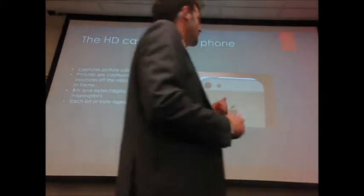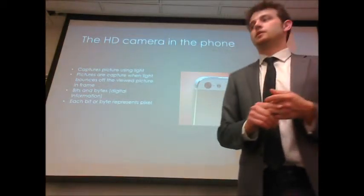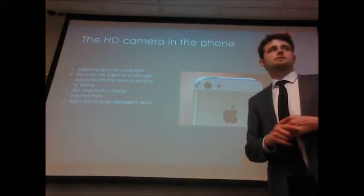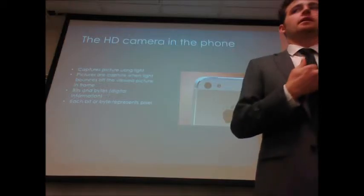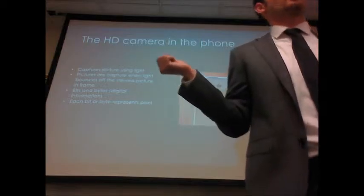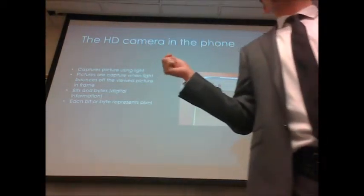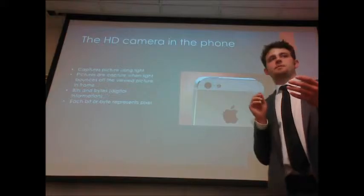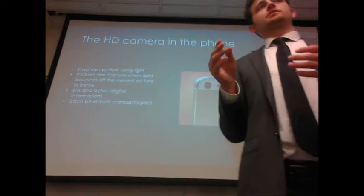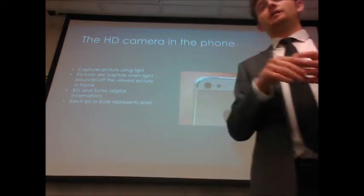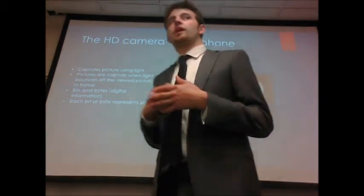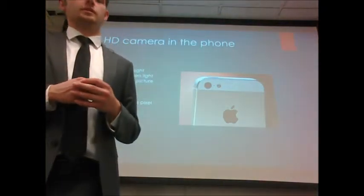Many phones today have small digital cameras. Cameras work by sending out light and then light is received back. The cameras in most of our phones today are digital. Digital cameras work by reading the light that comes back as ones and zeros, bytes or bits. The phone then interprets these bytes and bits into pixels, digital information, and then creates a picture by viewing these pixels.